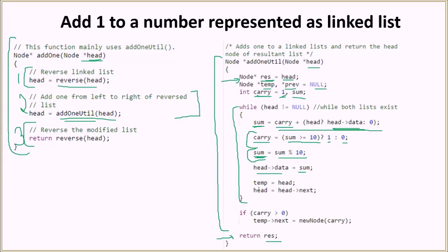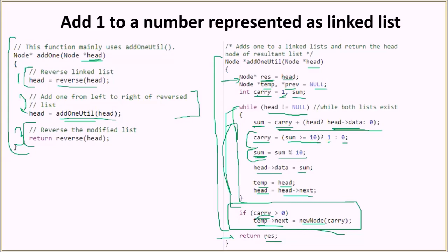We store the current head in temp, then update head to the next node, continuing to traverse and add carry to each node's data. Once the loop is done, head equals null and we break out. If there is still a remaining carry — for example, 999 becomes a four-digit number 1000 — we create a new node, assign temp's next to this new node, and return the result variable which holds the original head.